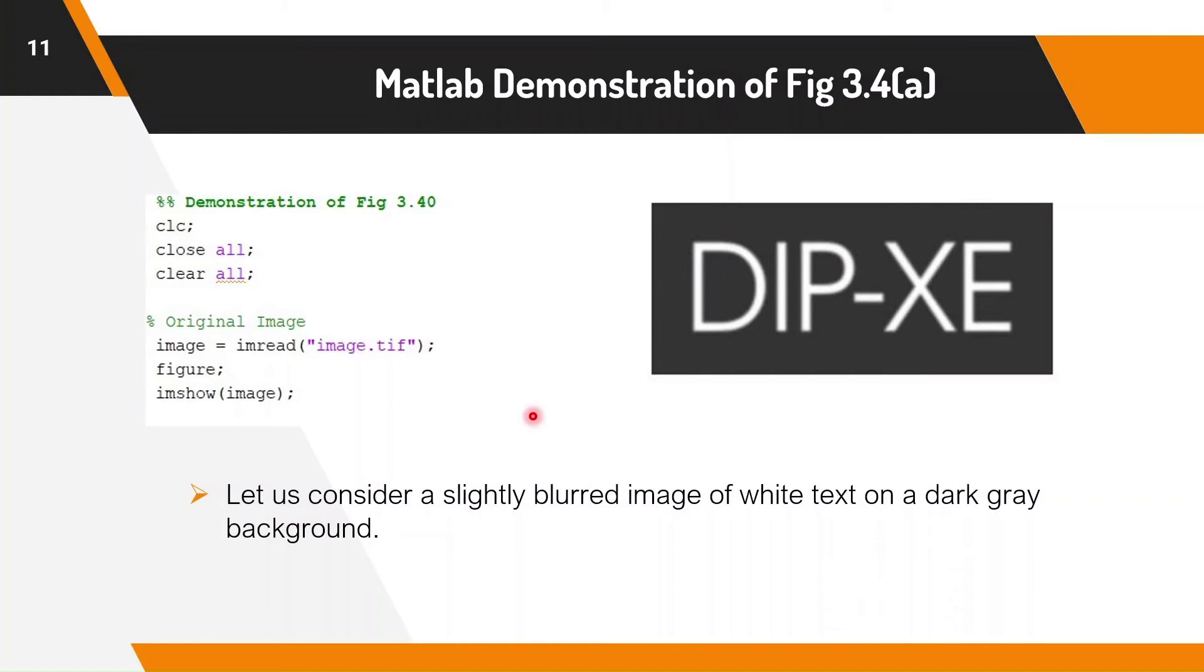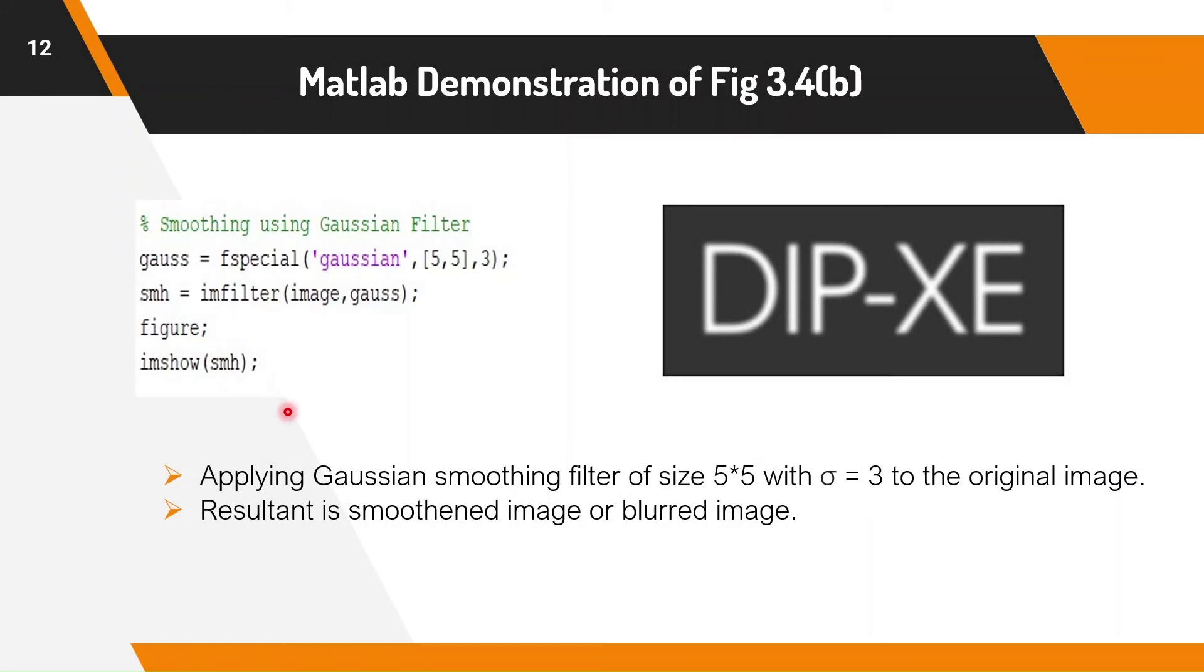Let us consider a slightly blurred image of white text on a dark grey background. In MATLAB we use imread command to read the information of an image. Since this is a grayscale image, we get a 2-dimensional matrix. Now we apply Gaussian smoothing filter of size 5 by 5 with variance 3 to the original image. We use imfilter command to perform the filtering operation. The resultant of the filtering is a smoothed image or blurred image.